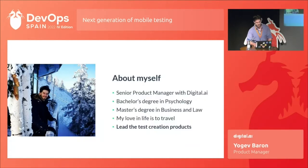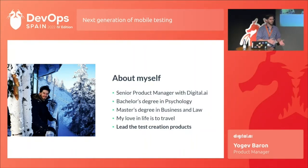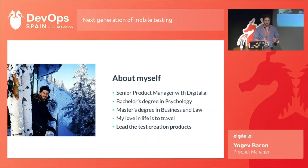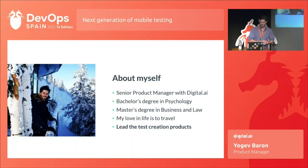I will start with presenting myself. I'm a senior product manager with Digital AI. I have a background in psychology, business, and law. My love in life is to travel — I've been in more than 50 countries and still counting. I'm leading the test creation products within Digital AI, and I think test creation products, like any other product, have a psychological part to them.